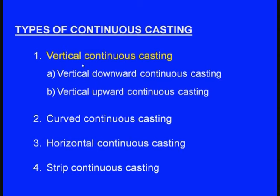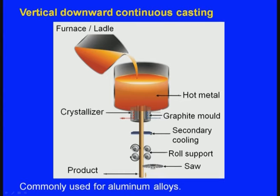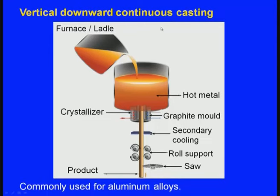Now we will see all these one by one. First we will see the vertical continuous casting — specifically the vertical downwards continuous casting. In vertical downward continuous casting, the solidified billet or the solidified bar will be travelling towards the bottom, downwards.